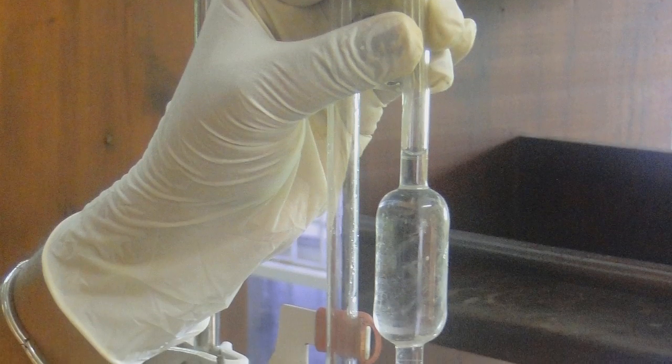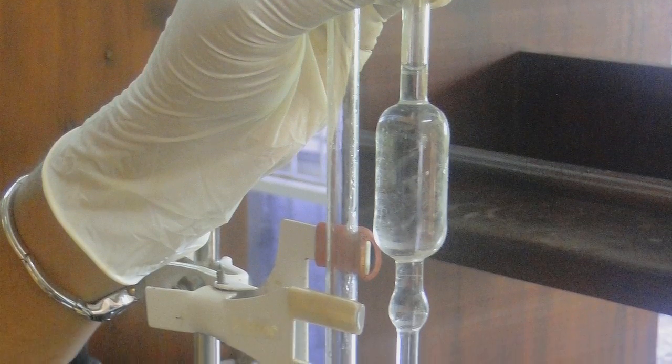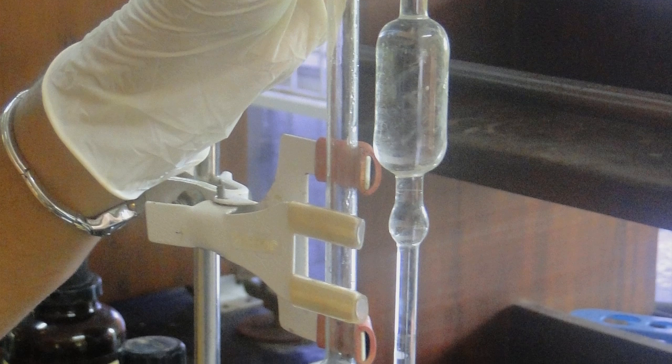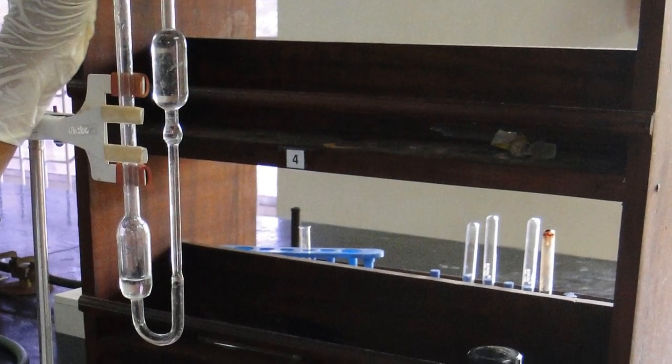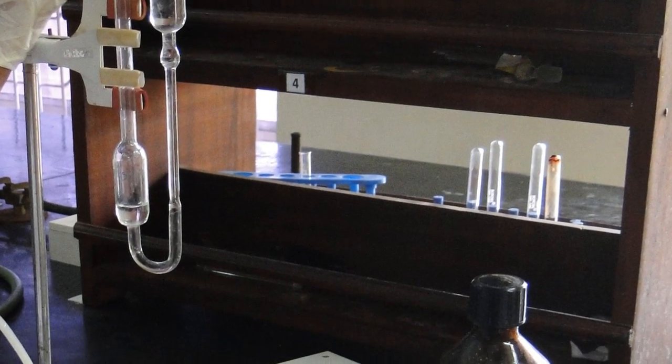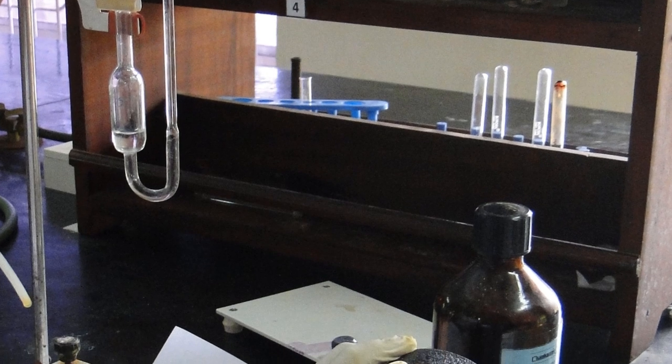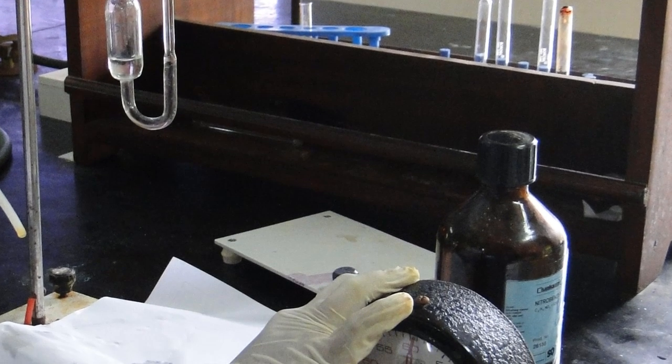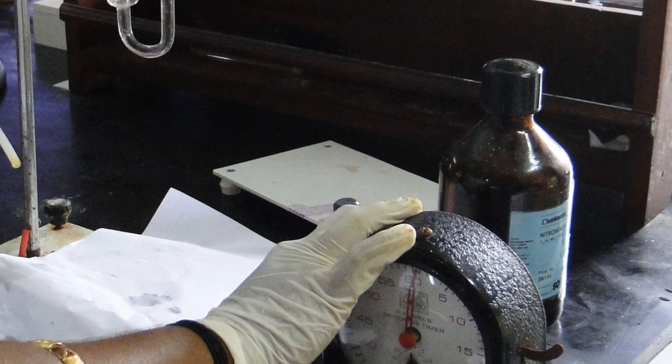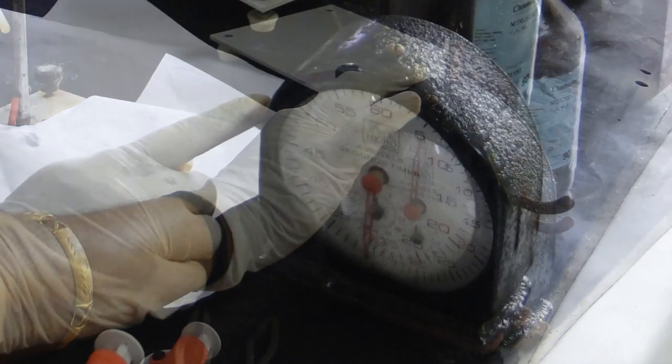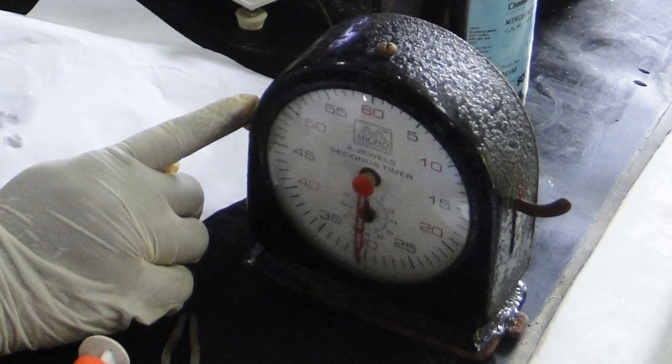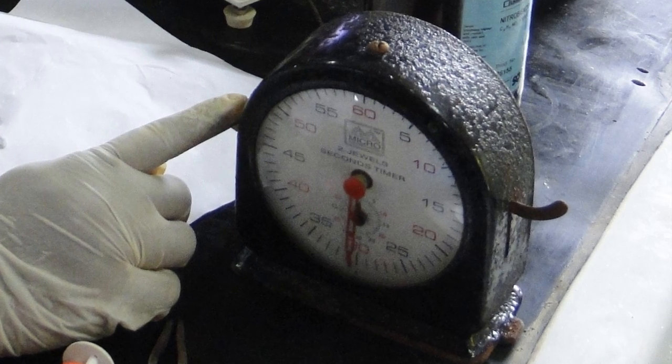Using the pipette pump, suck up water until it rises above the upper mark C and allow it to flow under its own weight. The time of flow of water from C to D is counted by starting the stopwatch as the meniscus just passes mark C and stopping as it passes the lower mark D. Take at least three or four readings with water and then take the mean of them.